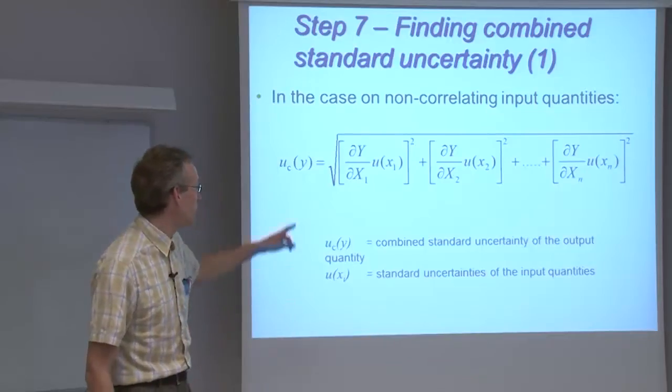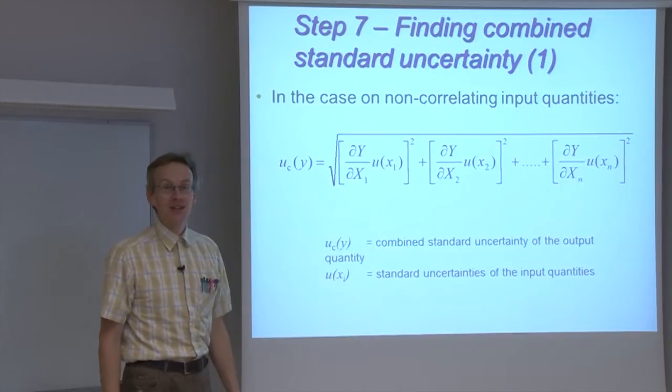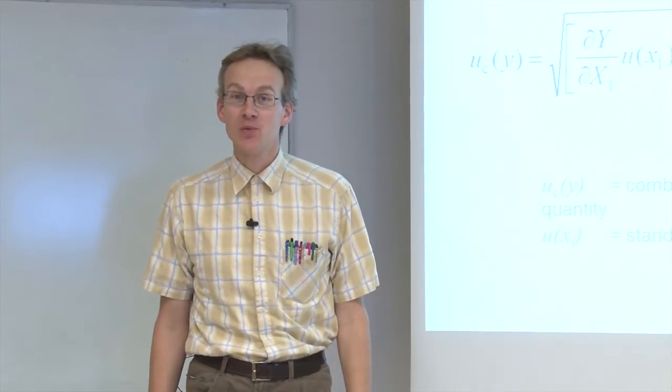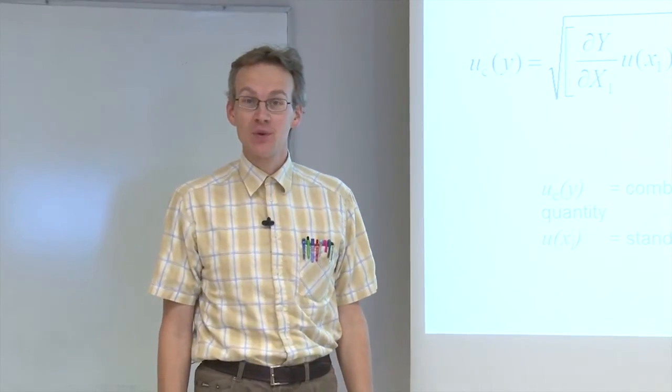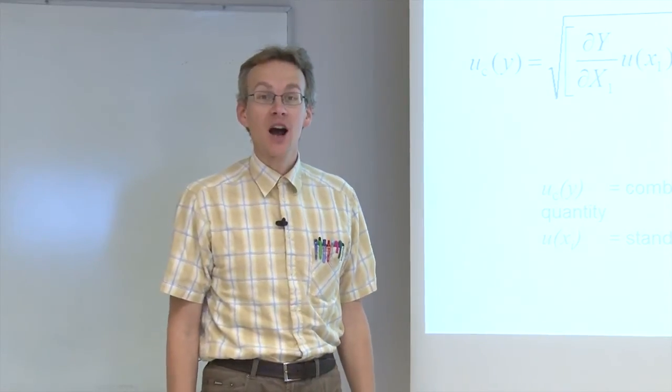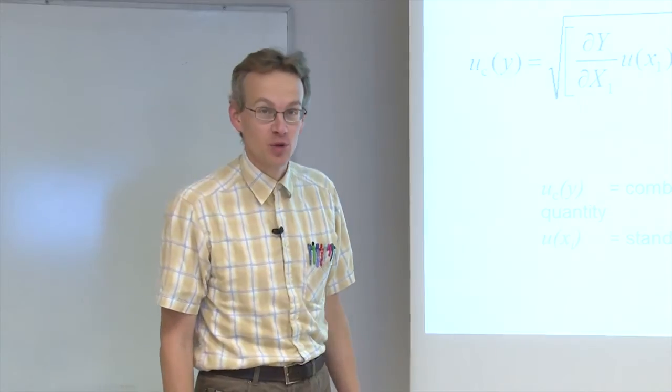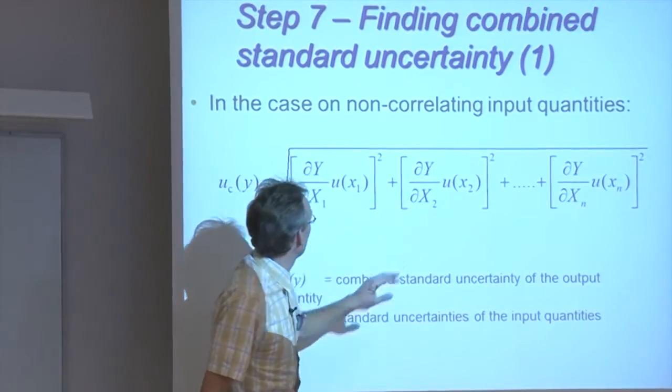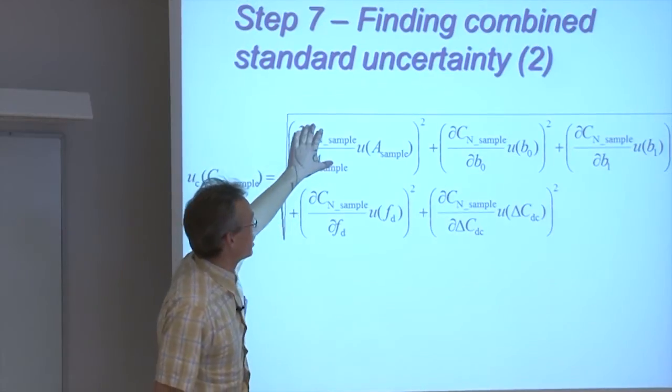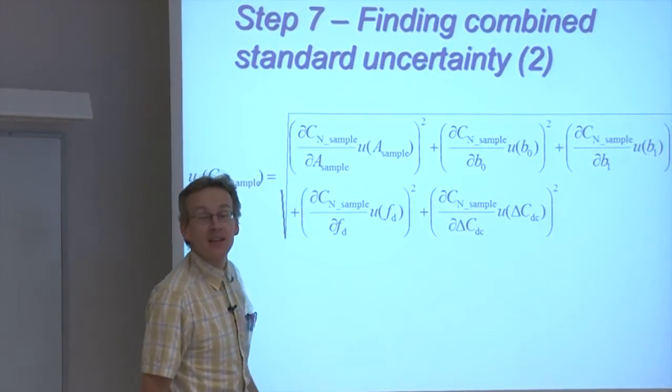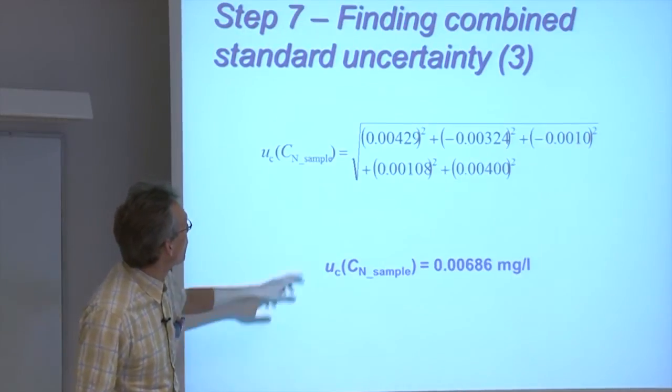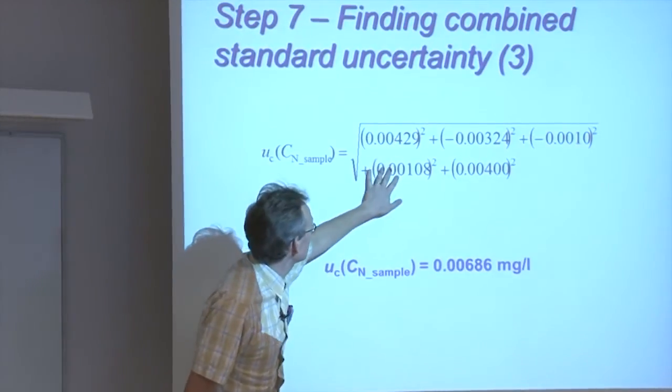I mentioned that these uncertainty components can be calculated numerically, and now we will be looking at how exactly we do that. For this, we will use the so-called Kragten spreadsheet approach, so that each of these components, which in our case actually look like this, will be calculated separately.